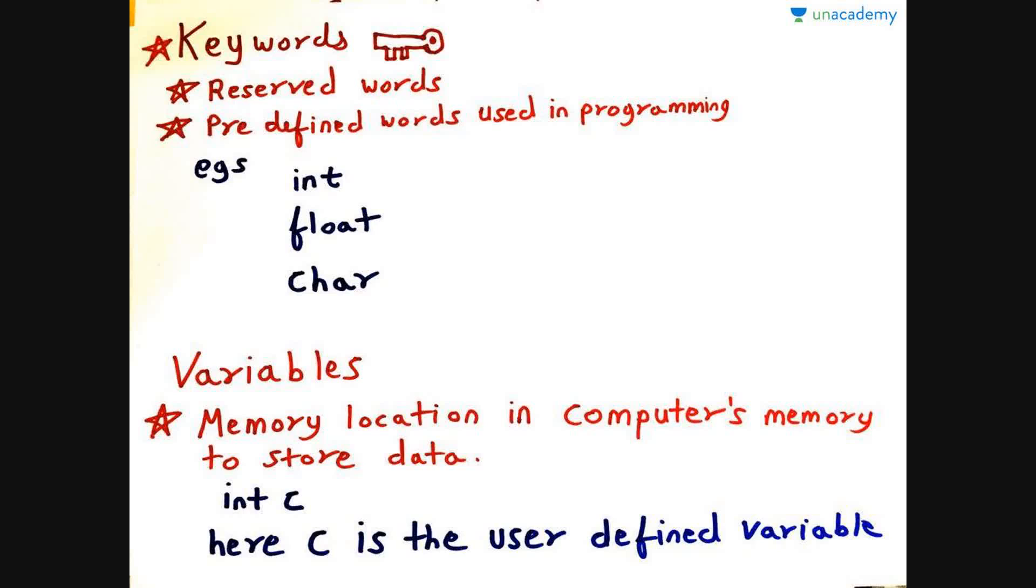Now we are all familiar with the word key, which means important or is a device used to open things like your house doors. The same goes for programming. Keywords are reserved words which have predefined meanings and are used to do some function. Examples of keywords are int, float, char, double, etc.